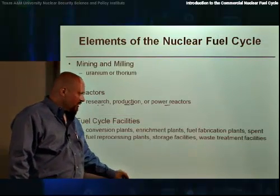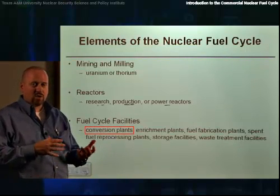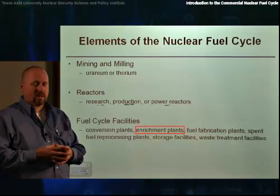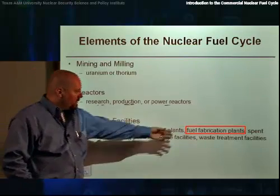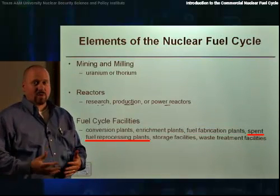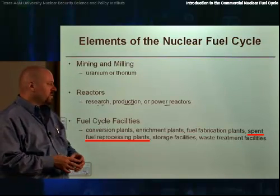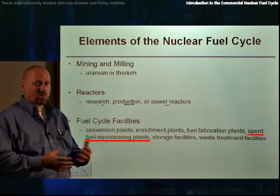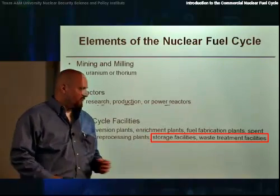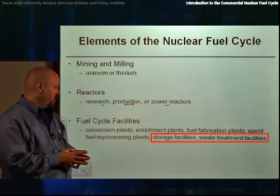Fuel cycle facilities are typically facilities like conversion plants, which change uranium from one chemical form to another; enrichment plants, which enrich uranium in the isotope U-235; fuel fabrication plants, which fabricate the fuel used in reactors; spent fuel reprocessing plants, which take the spent nuclear fuel out of the reactors and chemically process it to separate and recycle that material for additional use in a reactor; and then storage facilities and waste treatment facilities for dealing with waste products and materials stored during the fuel cycle activities.